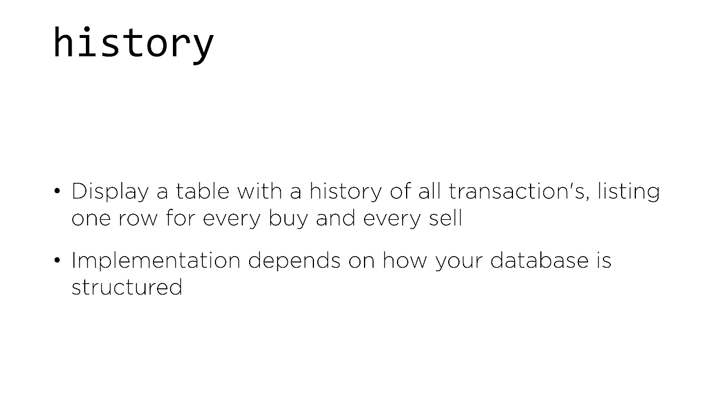Now let's give users the ability to see a history of all their previous transactions. When the user accesses the history route, display an HTML table with all previous transactions — one row for every buy or sell — including information about what stock was bought or sold, how many shares, and when the transaction took place. How you implement this will depend on how you've designed your database. It's possible you'll need to revisit and revise your existing database structure to support this history feature.